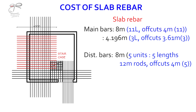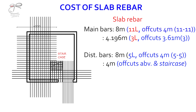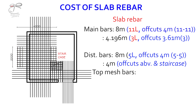Remember the off-cuts we've been having from the other main bars — we need 17 units of that. We use the 4-meter off-cuts from above, and if it's not enough, we complete the off-cuts from the staircase rebars. To complete the top mesh of this region, the 2-meter bars — there are about 6 of those. So 2 meters multiplied by 6 is 12 meters, meaning one length of 12-meter rod will suffice for that.